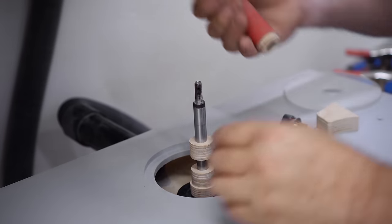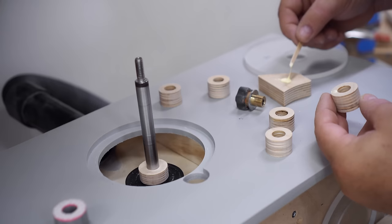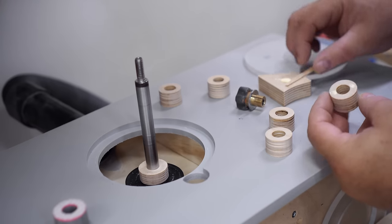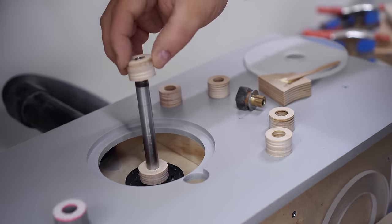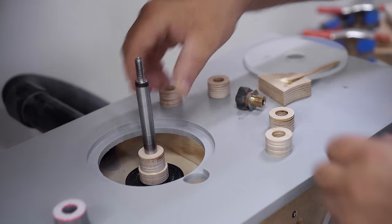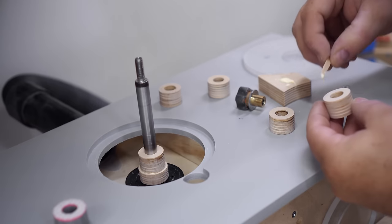After I've confirmed that everything's good, I can take it apart again and glue the parts together, just the wooden parts on the bottom and on the top. I'm not going to bother gluing it onto the rubber disc.